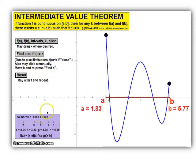The intermediate value theorem states that if we have a continuous function on the interval a, b, and what we have here is a blue curve that we'll call our function, it is continuous on the interval a, b. Then for any k between f of a and f of b, there exists some c value within our interval a, b such that f of c equals k.